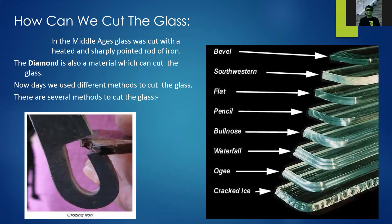Nowadays we use different methods to cut glass. As you can see in the figure, there is what you call a bevel cut, where the edge of the glass is cut into an angle. There is also the southwestern cut, the flat cut, the pencil cut which is kind of rounded, and the bullnose cut.